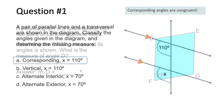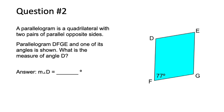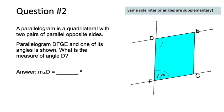Next we have a parallelogram — a quadrilateral with two pairs of parallel opposite sides. In parallelogram DFGE, one angle is shown; what is the measure of angle D? Looking at the two parallel lines with line DF as the transversal, we can see a pair of same side interior angles. Same side interior angles are supplementary, so we subtract: 180 minus 77 degrees equals 103 degrees for the measure of angle D.